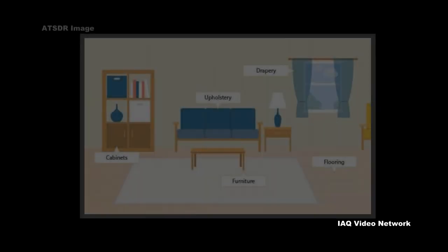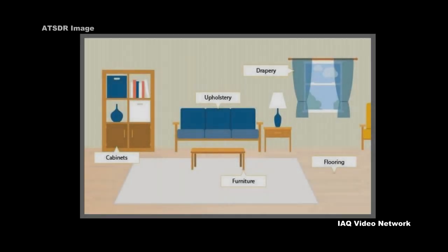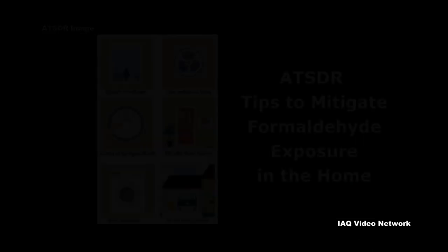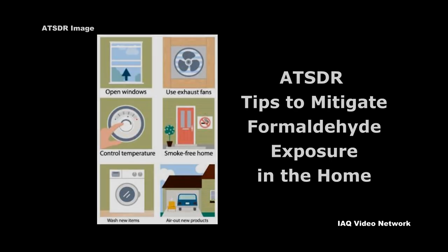One of the most significant sources of formaldehyde in many homes and buildings comes from the off-gassing of pressed wood products made using adhesives that contain urea formaldehyde resins. Formaldehyde can also be released from some types of insulation.